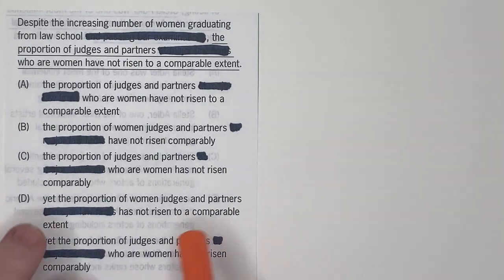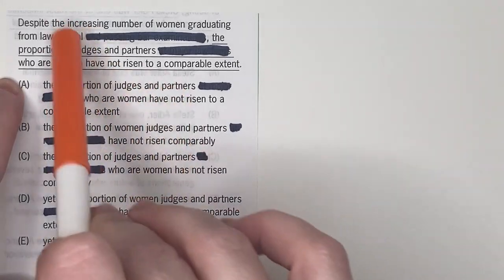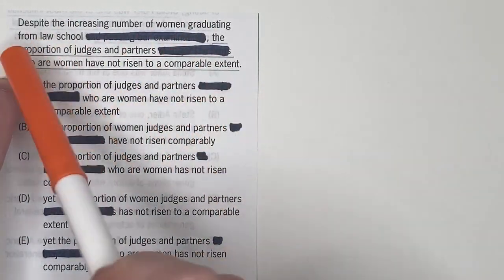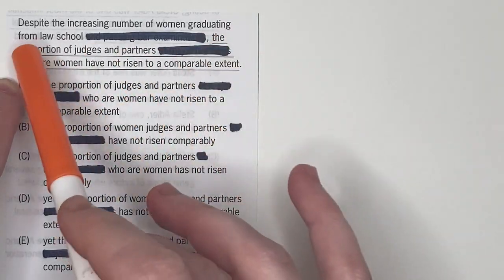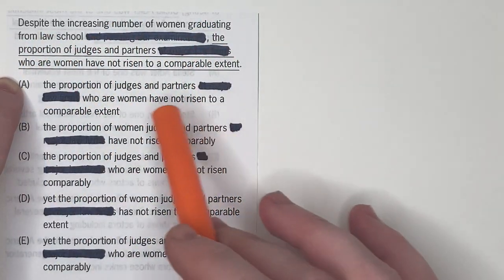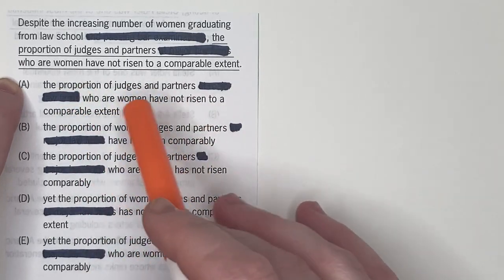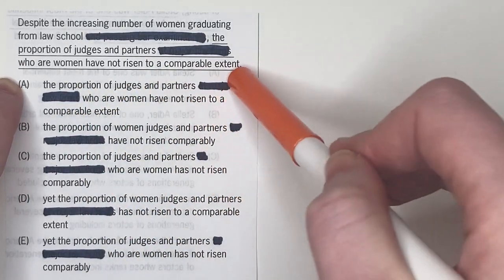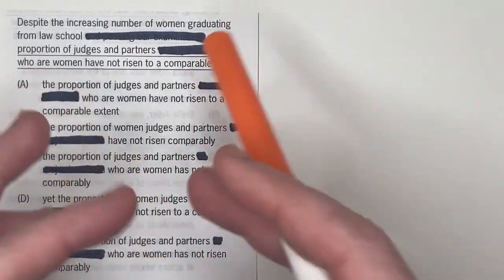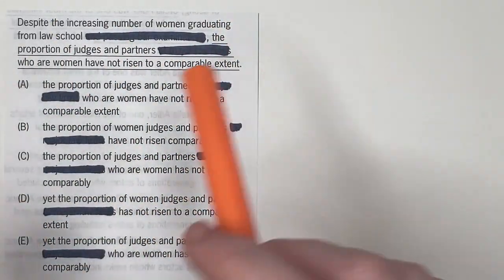All right. So as always, we're going to go ahead and start with A. So A is always just a repetition of the original sentence. Despite the increasing number of women graduating from law school, comma, the proportion of judges and partners who are women have not risen to a comparable extent. Great. So the reason I said this was easy is because the major concept this question is testing is noun verb agreement.